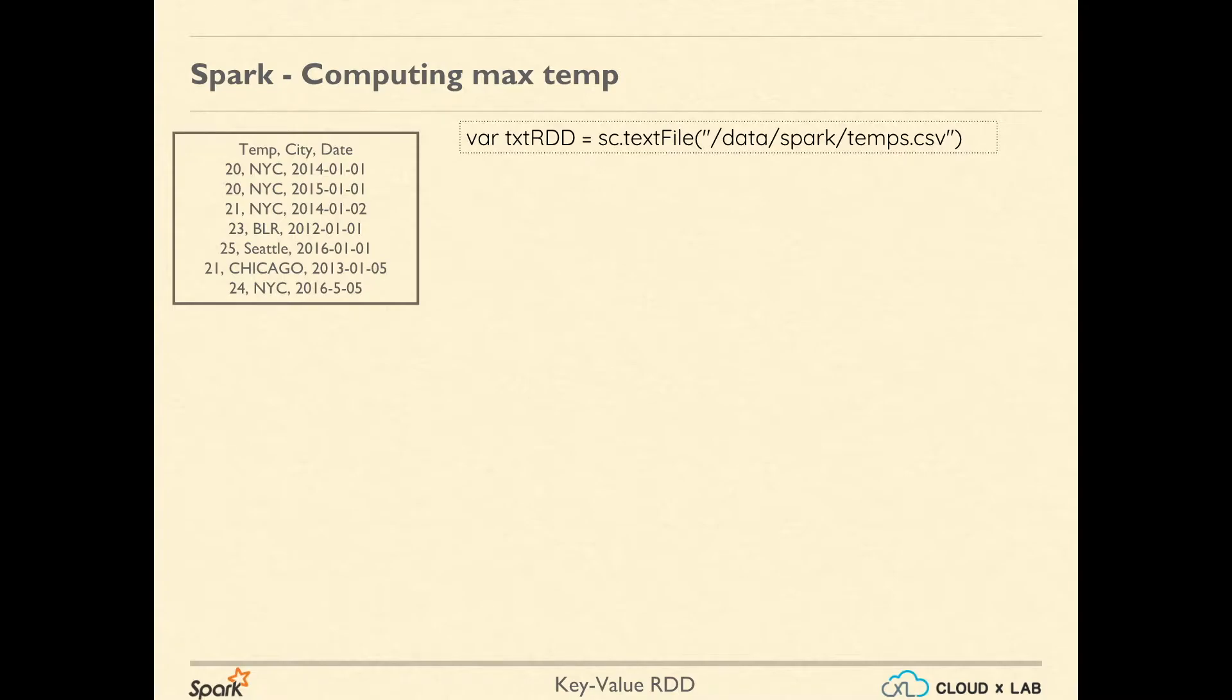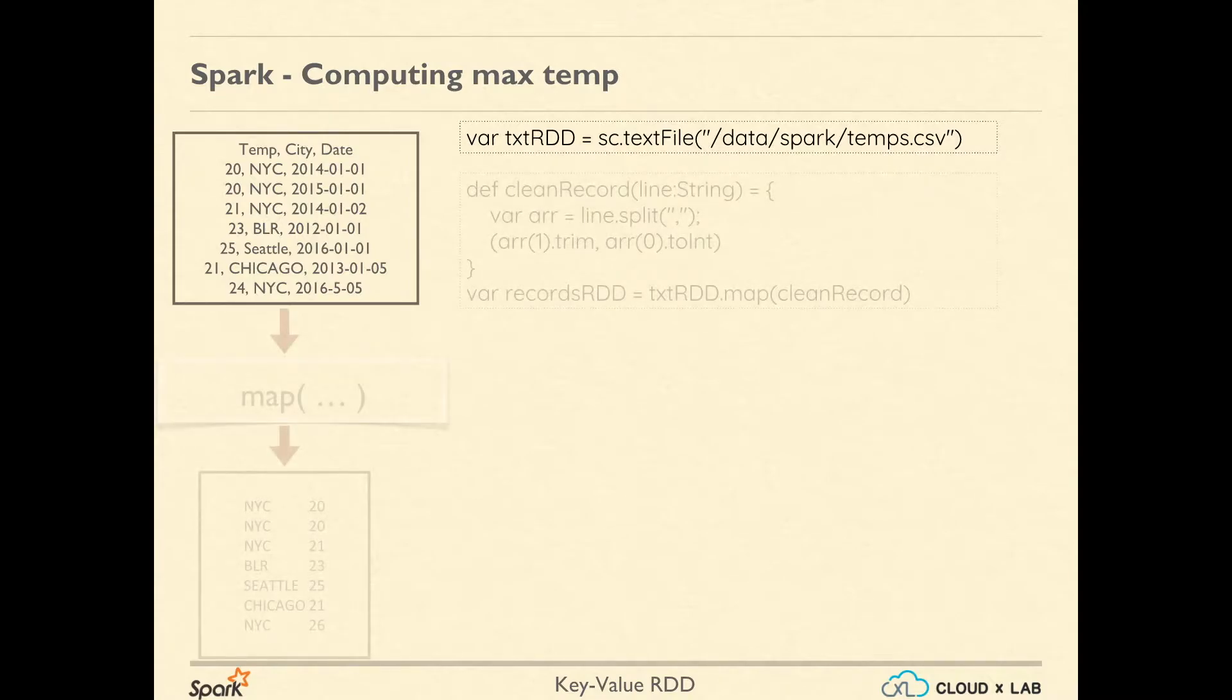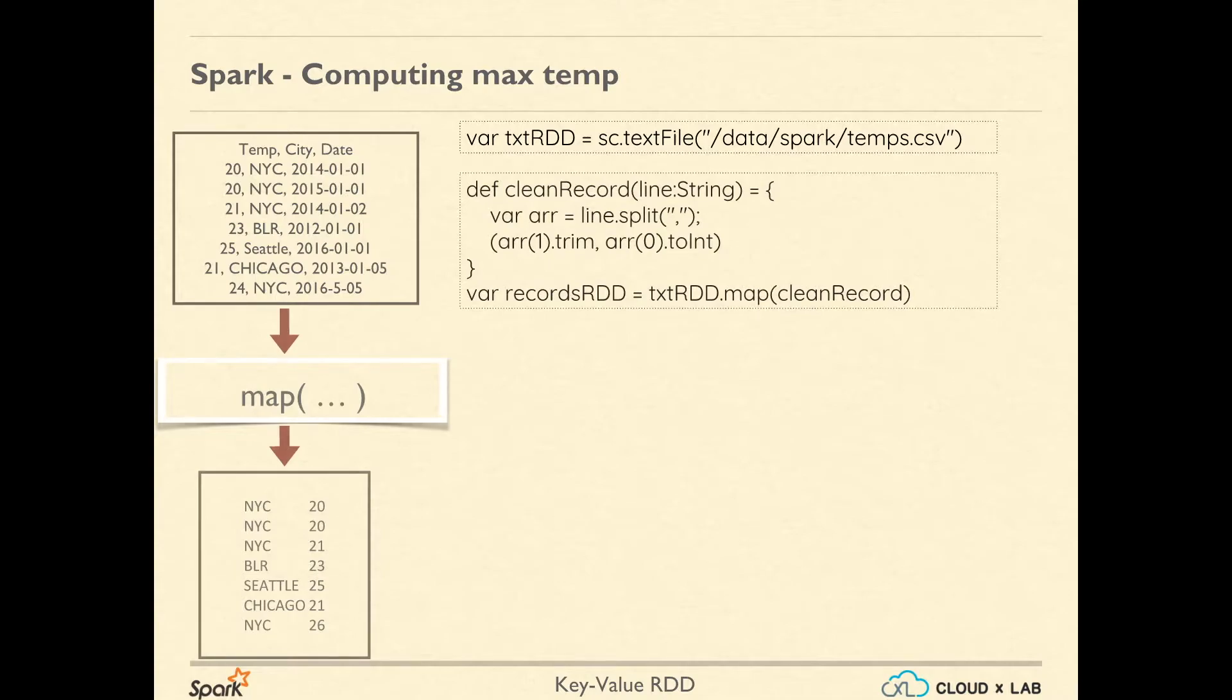You can check this using Hue or hadoop fs -cat. Now, let's define a function cleanRecord that would create the needed tuple or key-value pair for each line of text. cleanRecord first splits the line by comma and creates an array arr. This array's 0th element is temperature and first element is city. For city, we need to remove white space around it, and that's why we are using trim. We need to convert temperature from string or text to integer, so we are using toInt with it. This function returns a tuple having city as the key and temperature as the value.